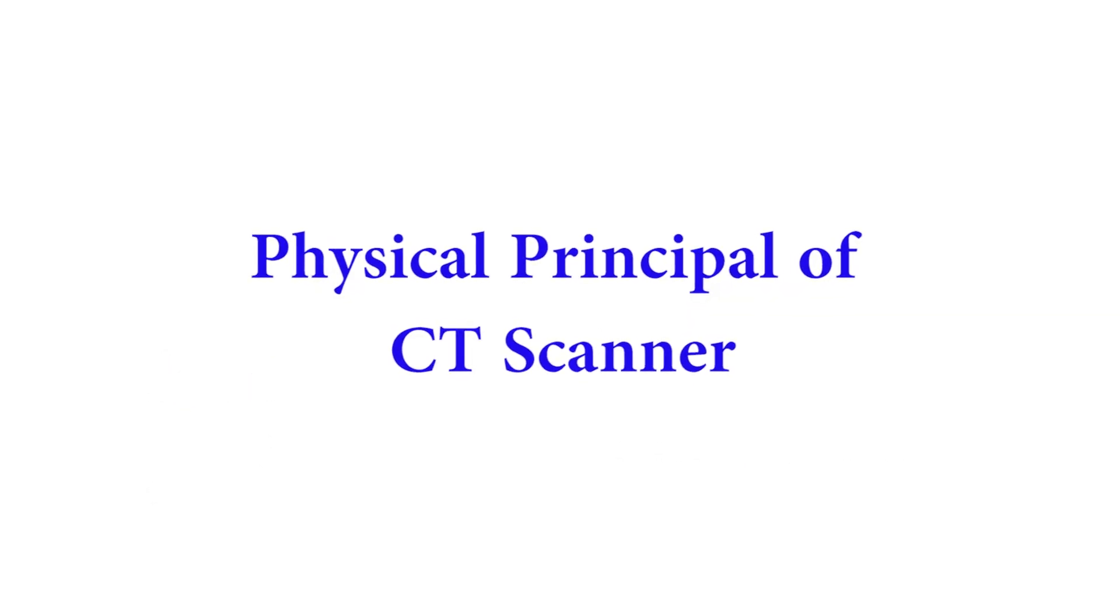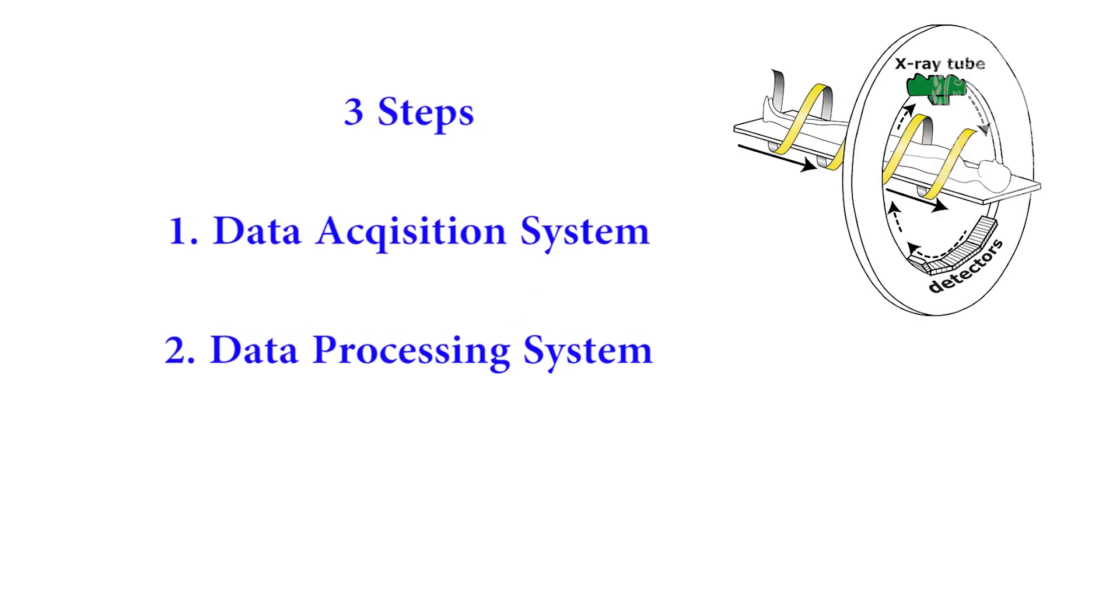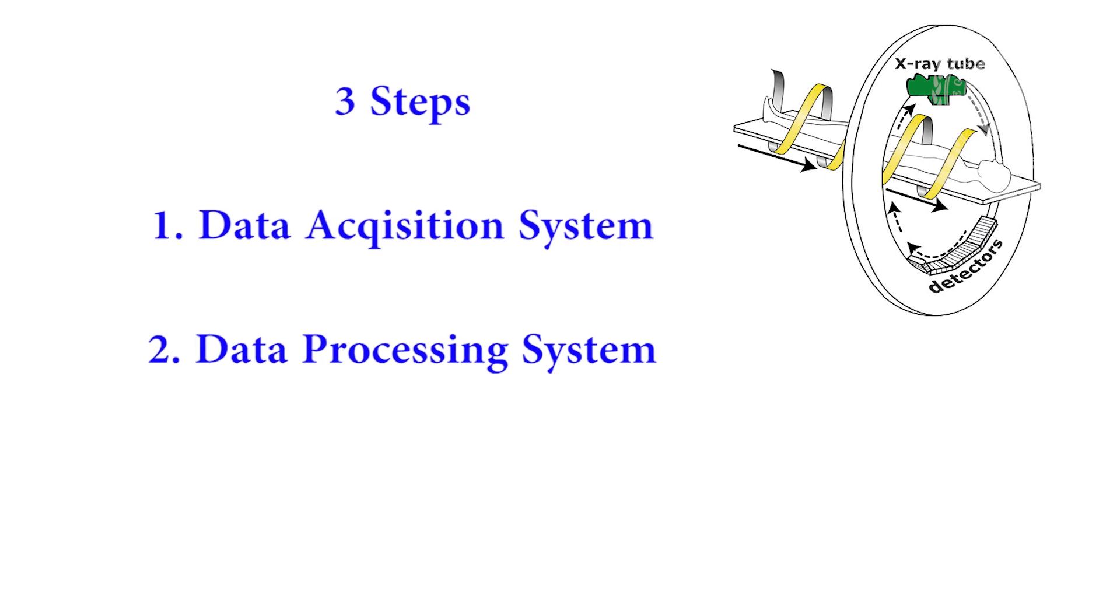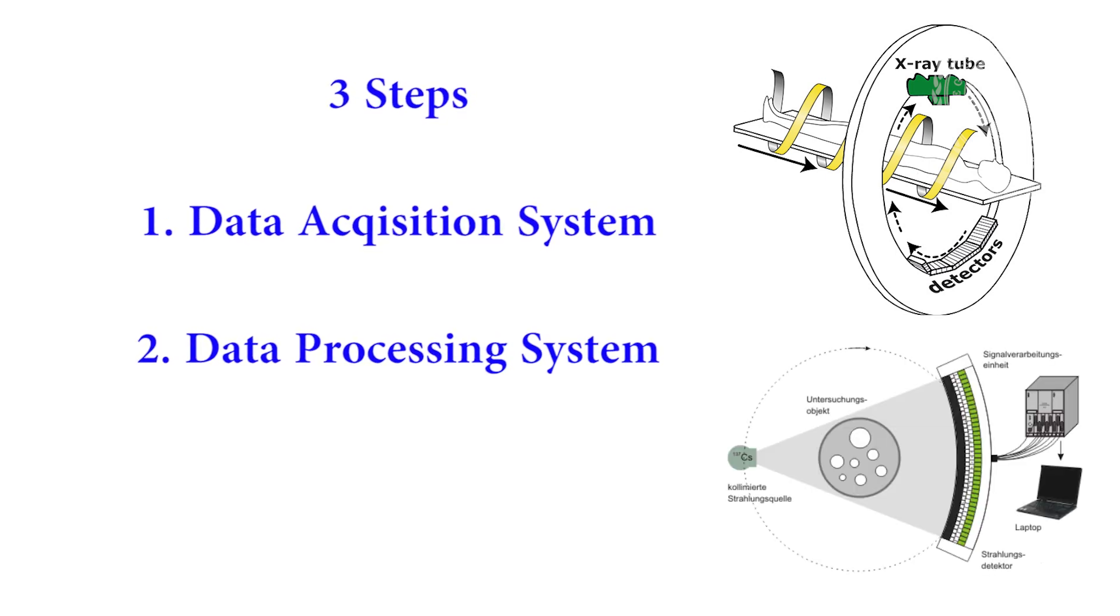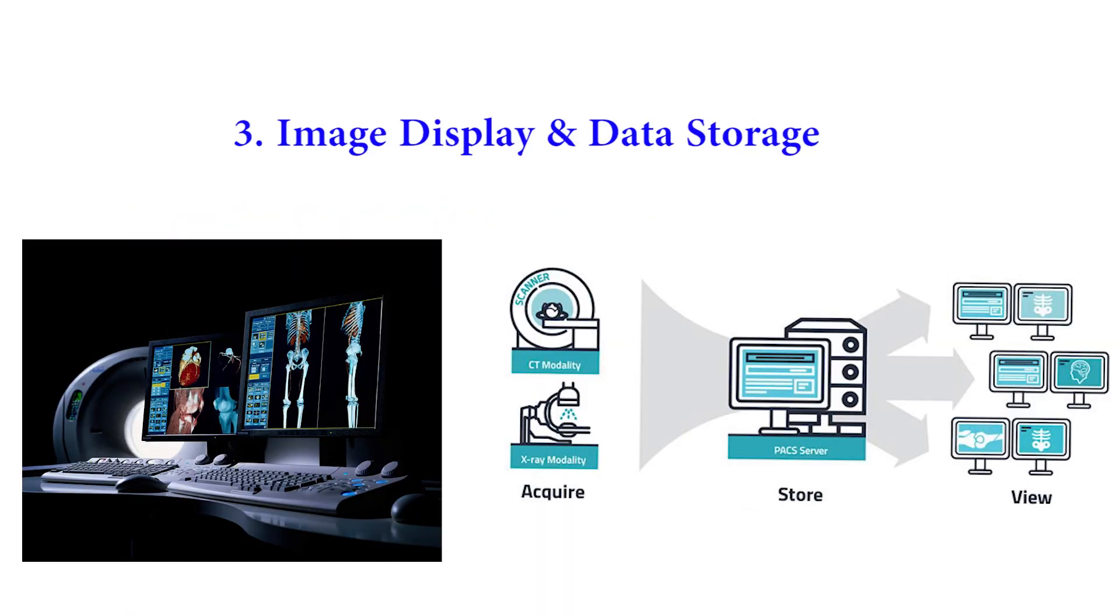The physical principle of CT consists of three steps: one, data acquisition system with the help of X-ray tube and detectors; two, data processing with the help of different computerized technology; and last step is image display on monitor and data storage.